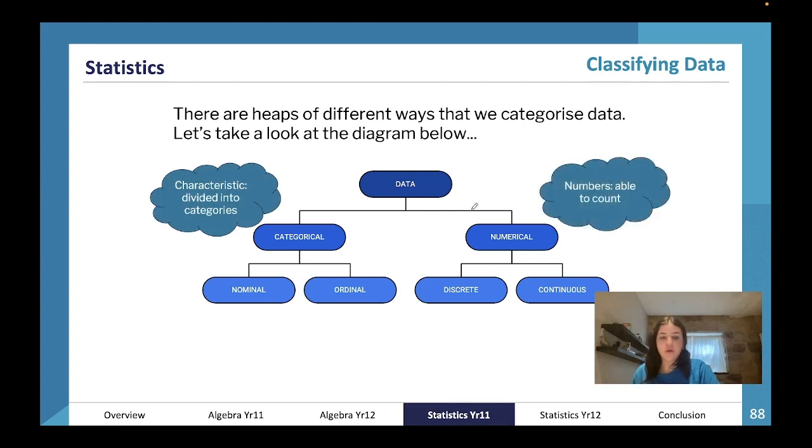We then break down categorical into nominal and ordinal. Before we do that, let's have a look at numerical. Numerical data is numbers you can count, so it's the number of shirts that somebody owns, the number of cars that somebody owns, the number of pets that somebody owns, the number of people in a room—anything that is countable.